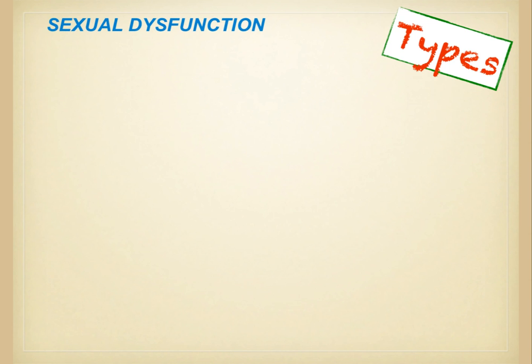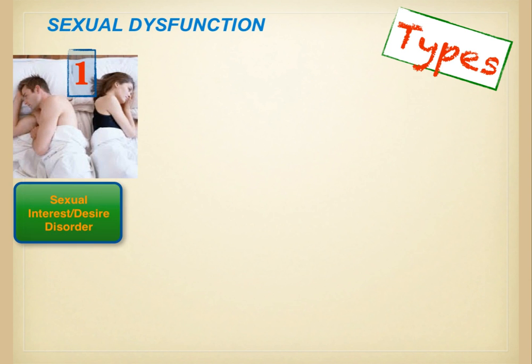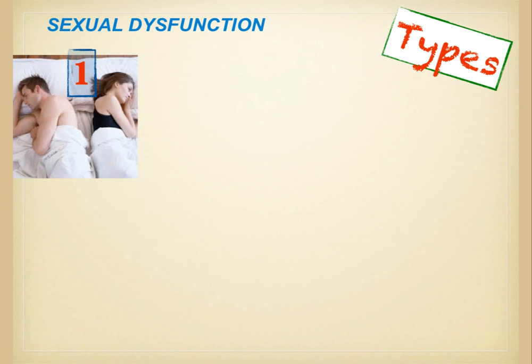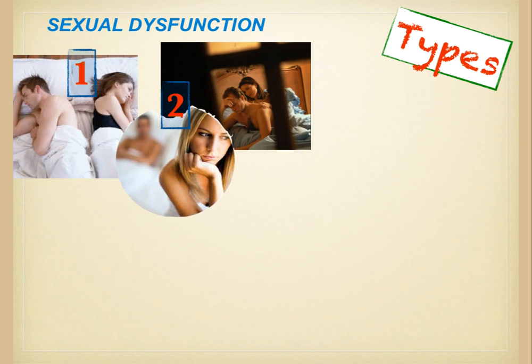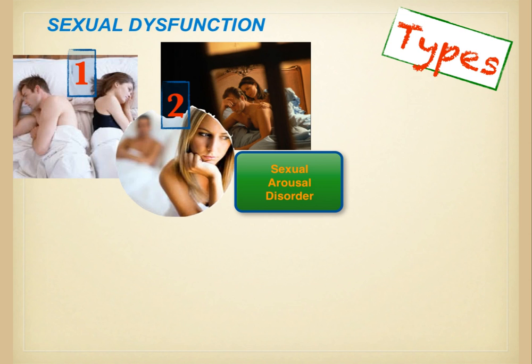The DSM-5 groups most sexual dysfunctions into the following categories. The first three categories are phases of the sexual response cycle, and the first two will be discussed together. The first is sexual desire disorders, which includes hypoactive sexual desire and sexual aversion disorder. The second group is sexual arousal disorders, covering female sexual arousal disorders related to vaginal lubrication and male erectile disorders related to attaining or maintaining an erection.